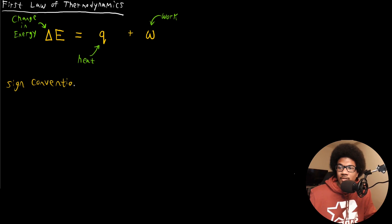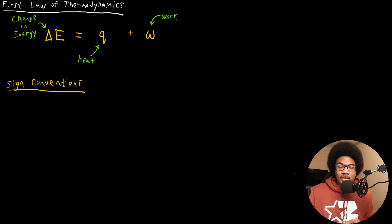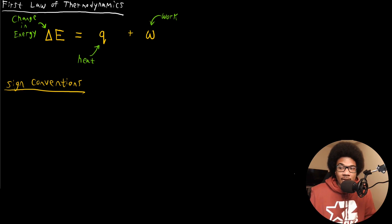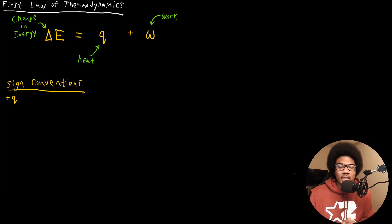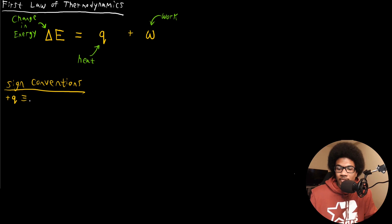Sign conventions. The important thing to understand about these sign conventions is that it's all from the point of view of your system — is your system gaining or losing energy? First, let's focus on heat. Heat will be positive — you'll have a positive q — whenever heat is flowing into your system. That means your system is gaining heat, so there's going to be a positive q. This is positive when heat is flowing into the system.